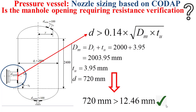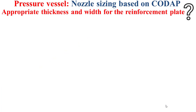It's worth noting that requiring a resistance verification means in most cases that we will add a reinforcement plate in the neighborhood of the opening, in order to locally increase the thickness of the shell in that area — as I explained in a previous video. Now I will explain how to size the reinforcement plate in terms of thickness and radial width.